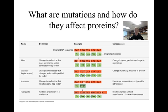A nonsense mutation occurs when a nucleotide switches so that the new codon is a stop codon rather than a codon which codes for an amino acid. Depending on where this occurs, it could have far-reaching effects, as only part of the protein would be produced.